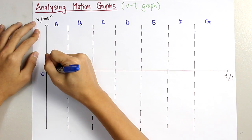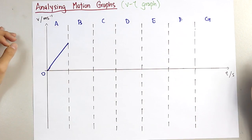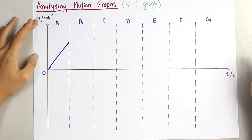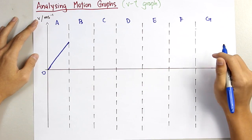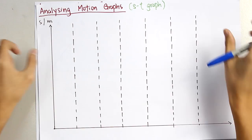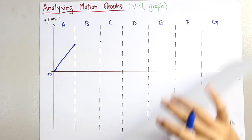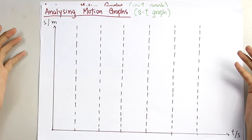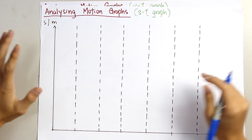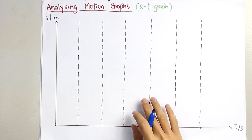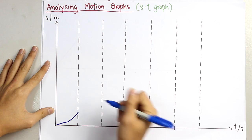So first, I draw this straight line. As it is a VT graph, this straight line represents increasing velocity at a constant rate, because you can see it's a straight line. So if I use this period and draw a graph for the ST graph — since the velocity is increasing at a constant rate, the displacement will be increasing. And as this VT graph shows increasing velocity, the gradient of the graph will be increasing as well, so it will be a curve.